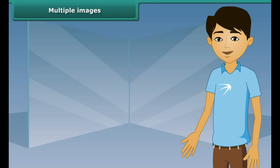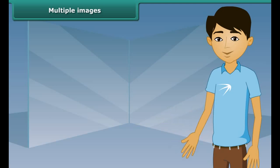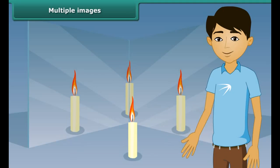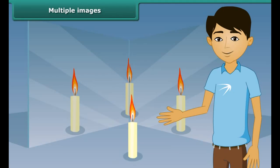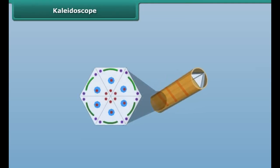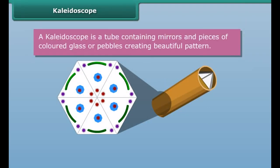Let us perform an activity to know the number of images formed using two plane mirrors. Take two plane mirrors and set them at right angles to each other with their edges touching. Place a lighted candle in between the mirrors. How many images do you see? Strangely, we can see three images of the candle in two mirrors. This is how multiple images are formed in a mirror maze that we all enjoy going through.